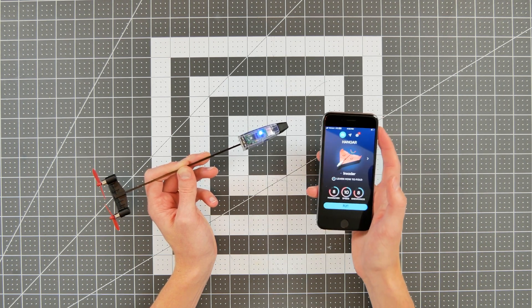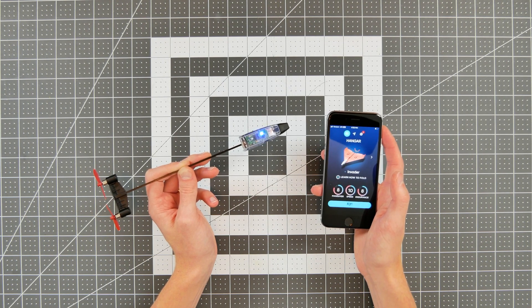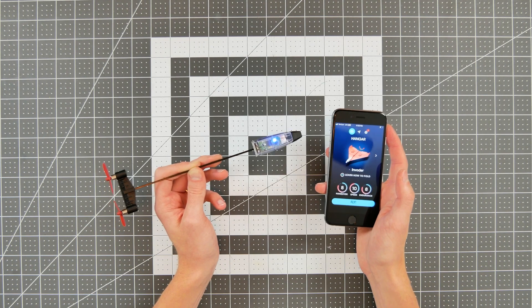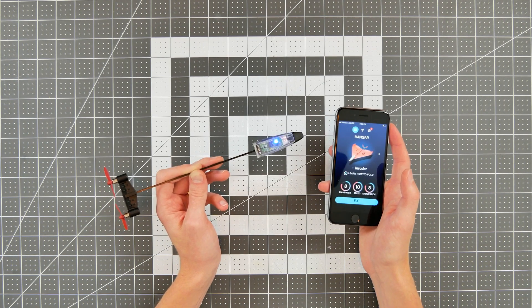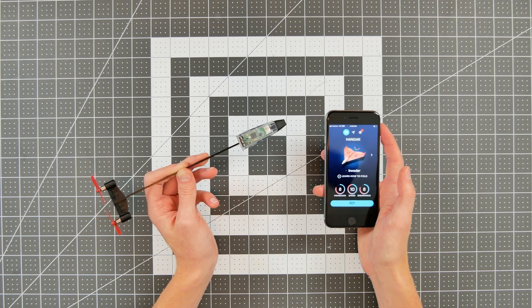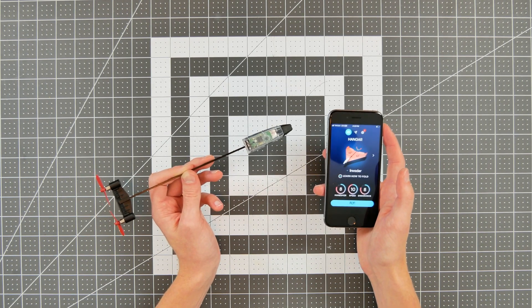A very important thing to note is that Android users will get a prompt asking you to allow the Power Up 4.0 to access the device's location. You must click allow in order for this Bluetooth connection to work. We're not collecting any information on you, but that is necessary for the function.